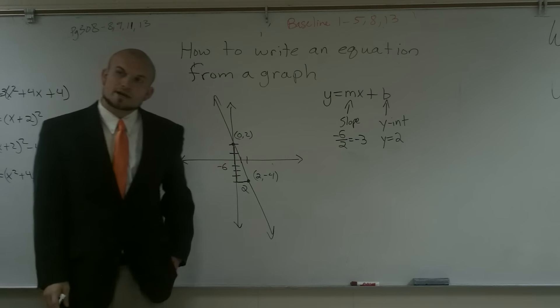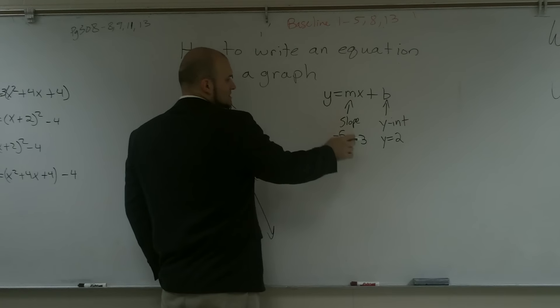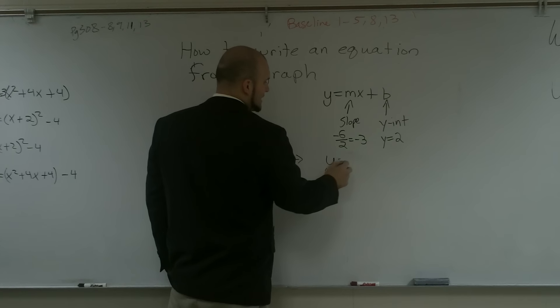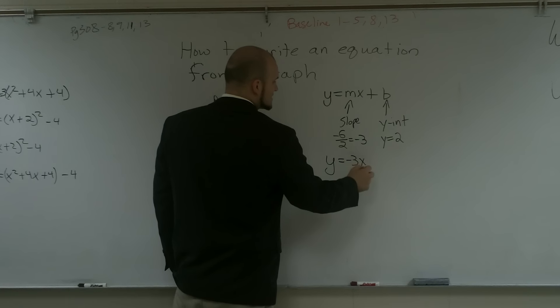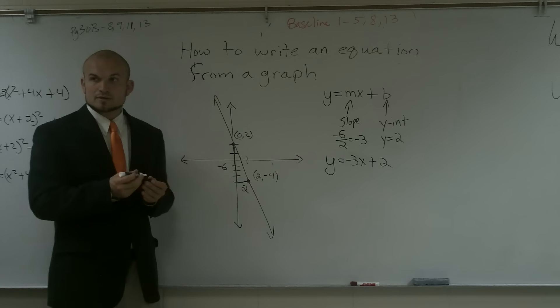That comes out to negative 3. So therefore, now if I want to write the equation, I have slope is going to be negative 3, and y-intercept is going to be 2. So my equation would be y equals negative 3x plus 2. And that is how you write an equation from a graph.